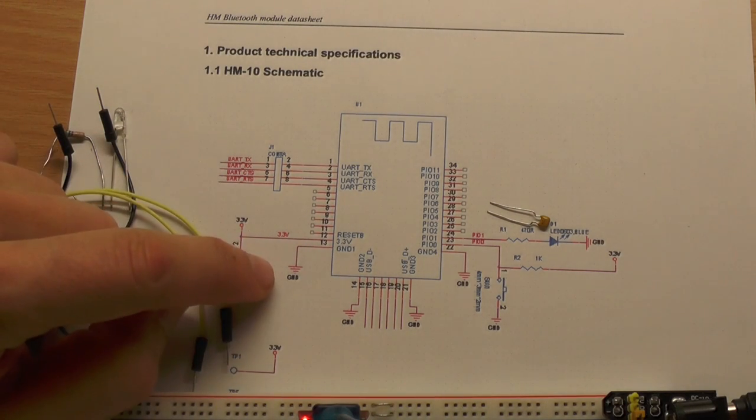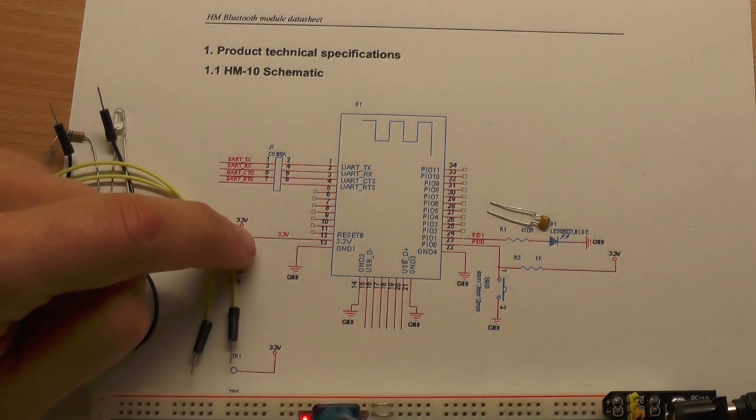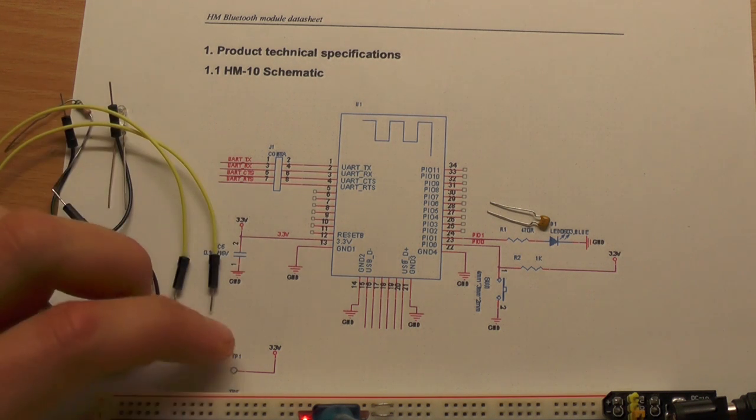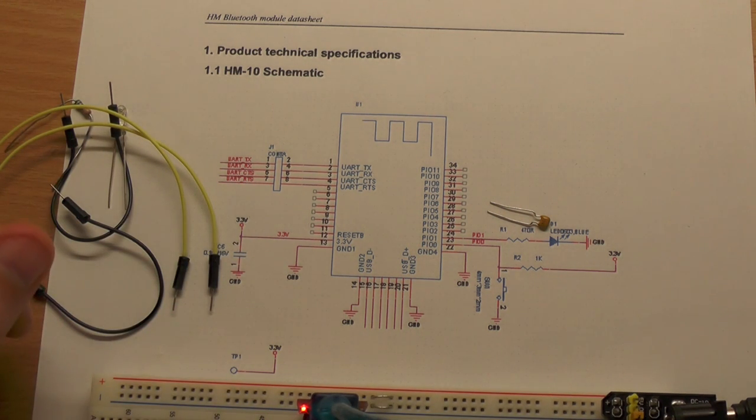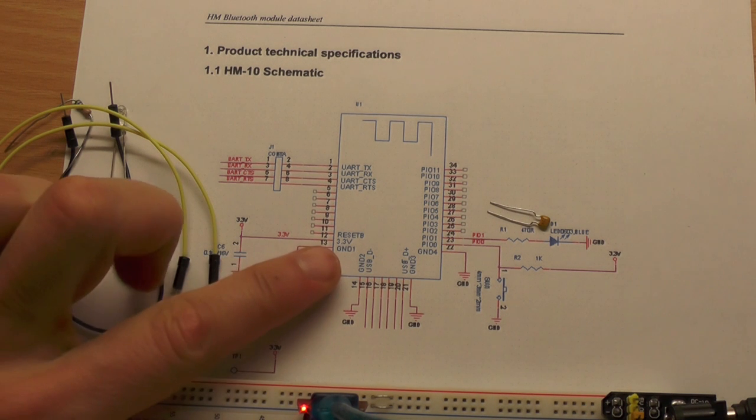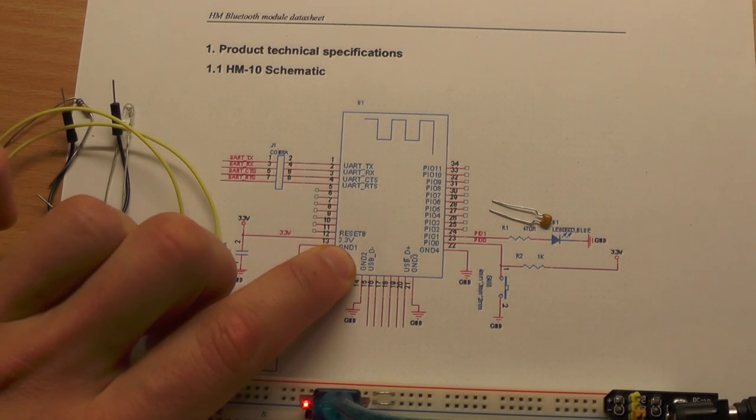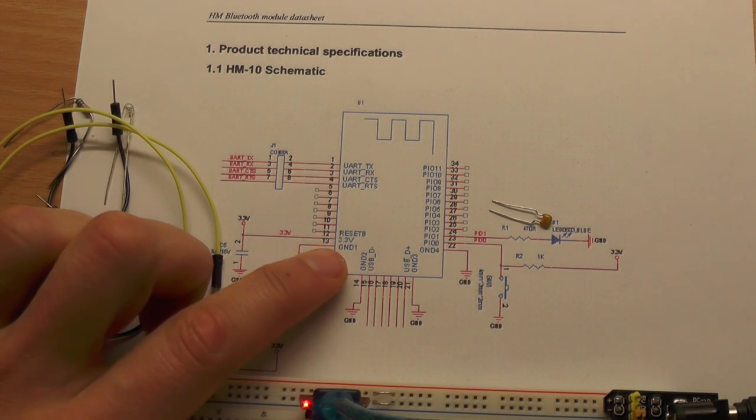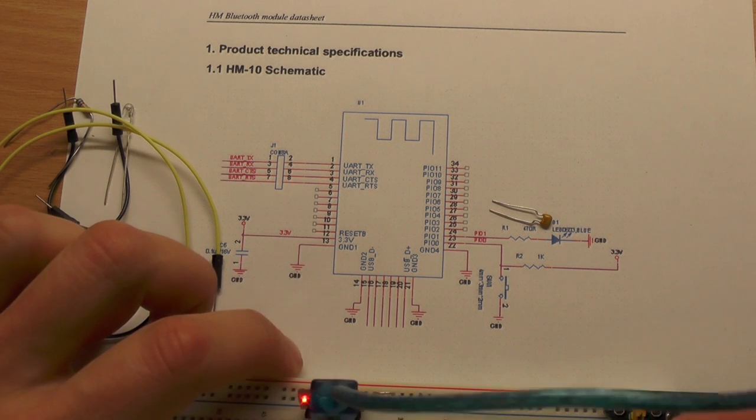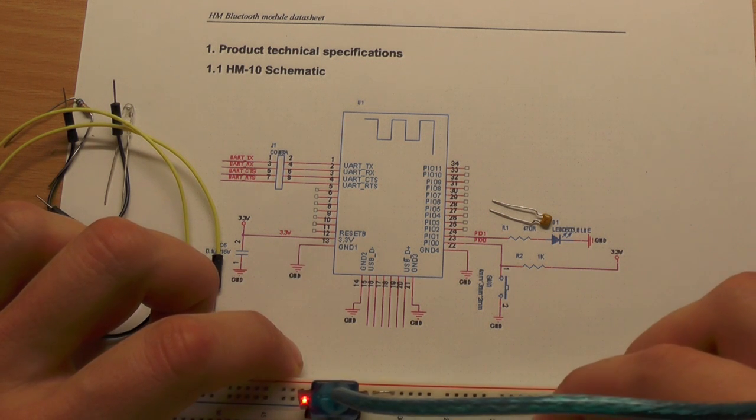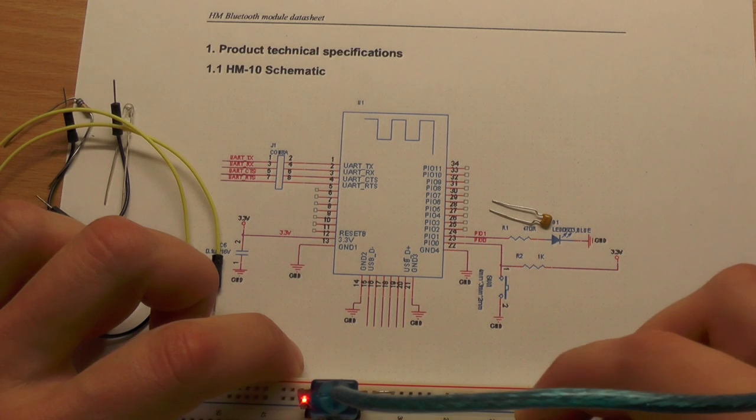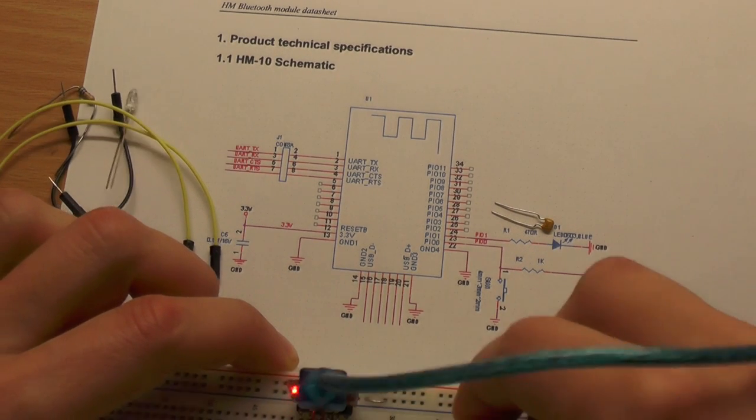We have 3.3 volts here which is the second from the bottom and we can see, okay this is one and this is the second, so this is our power line.